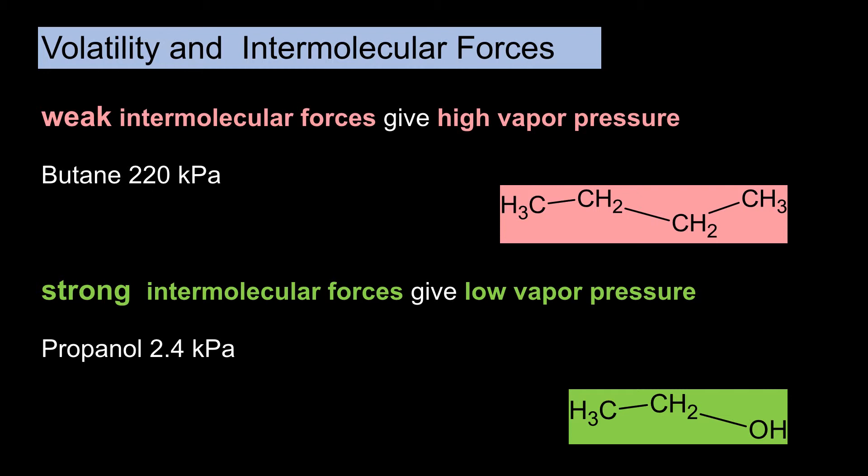Here we see two molecules, butane and propanol. Butane has a very high vapor pressure, while propanol has a much lower vapor pressure. Vapor pressure is indirectly proportional to the strength of the intermolecular force.